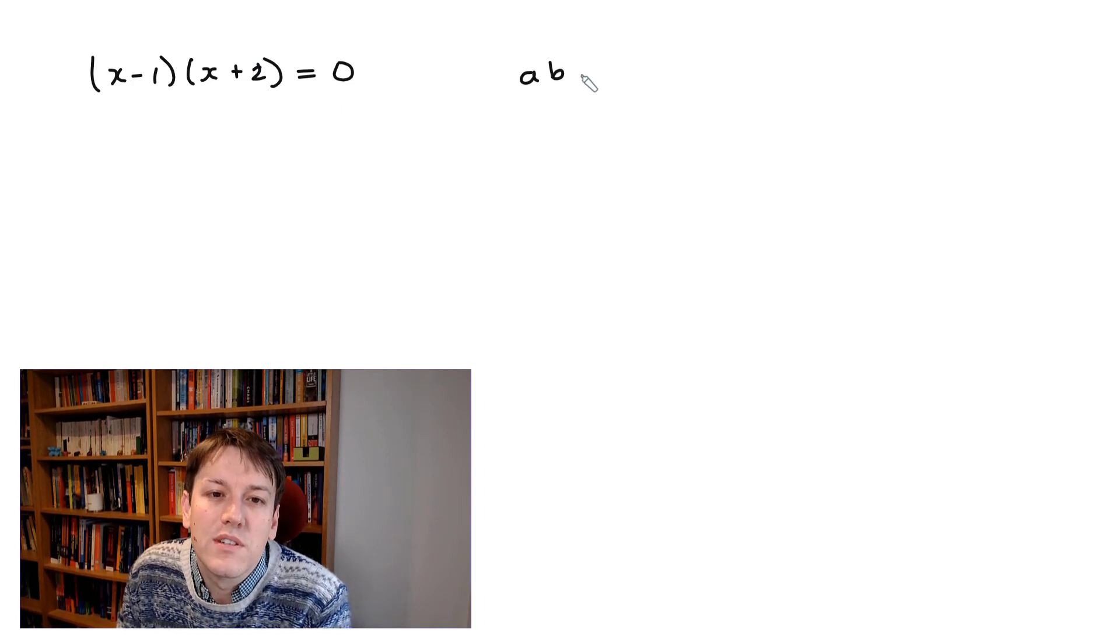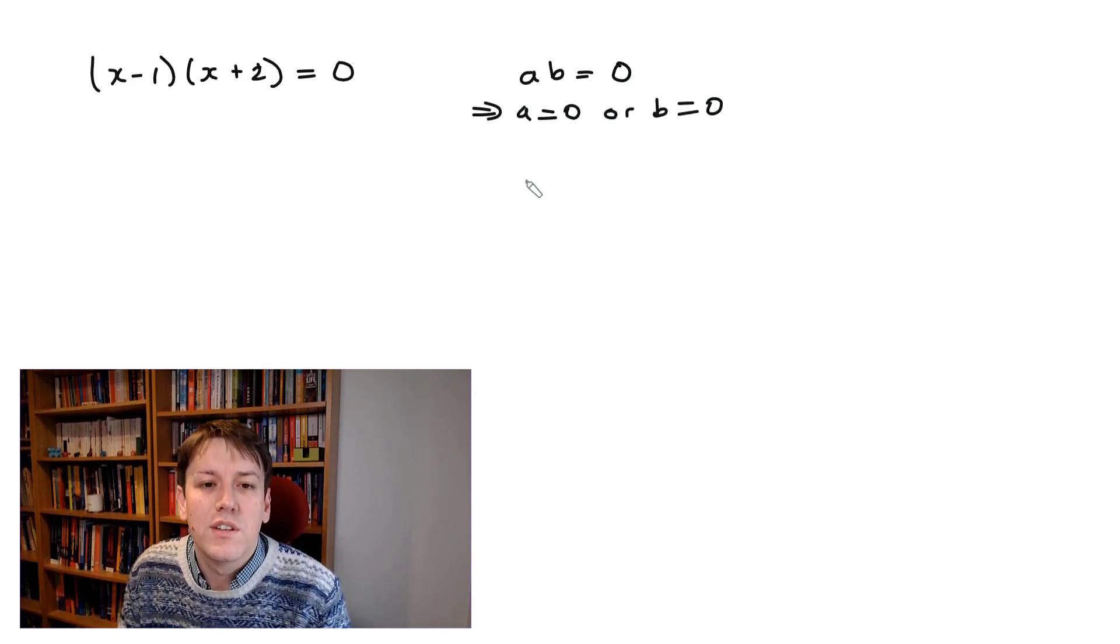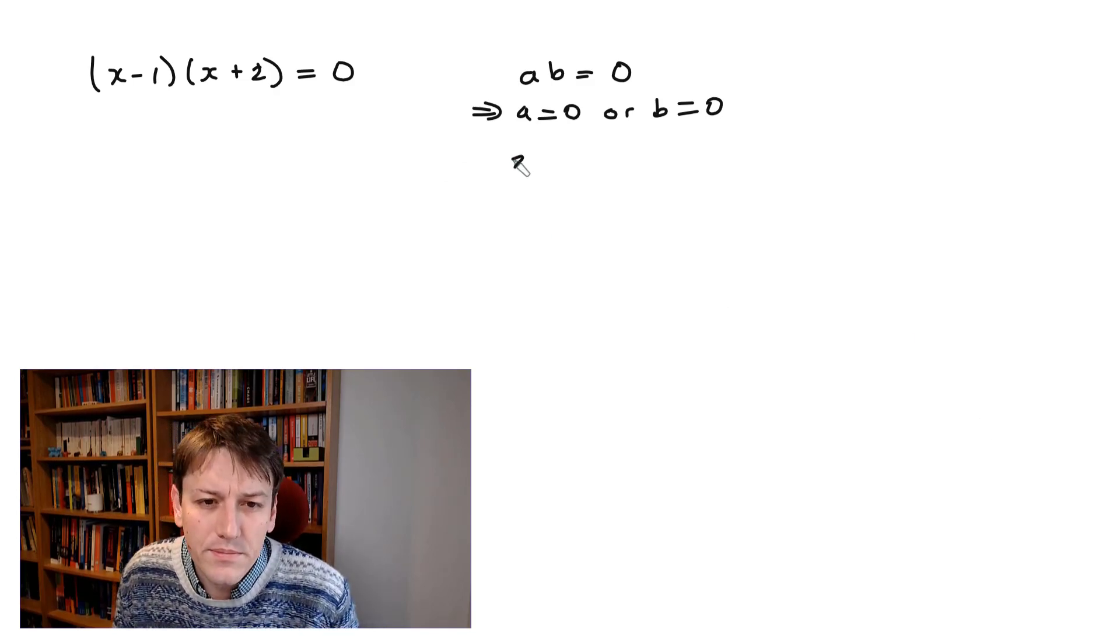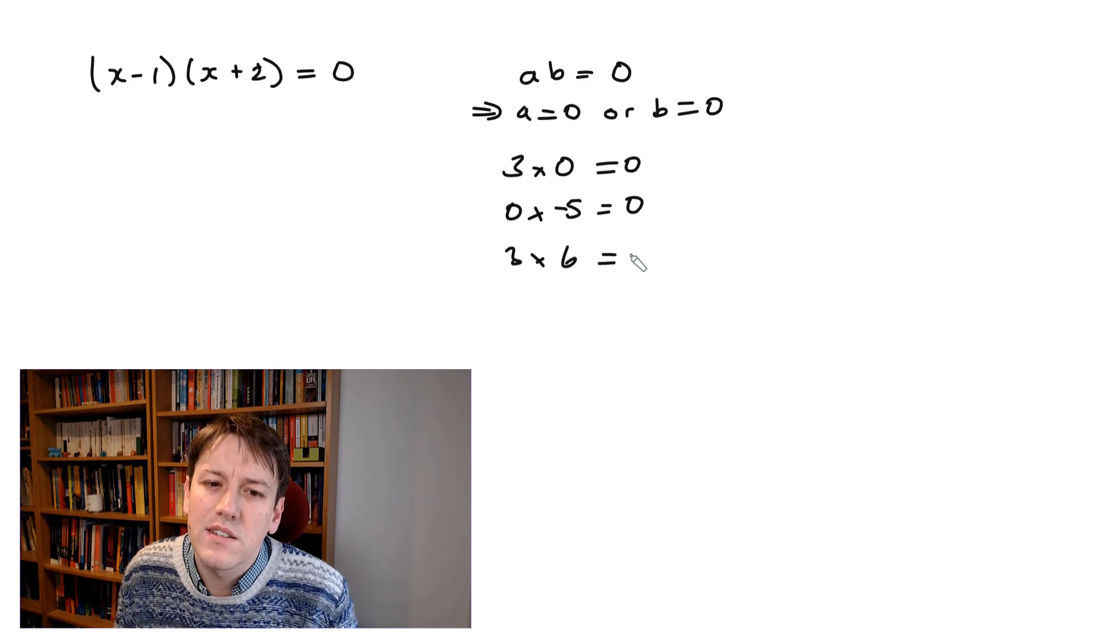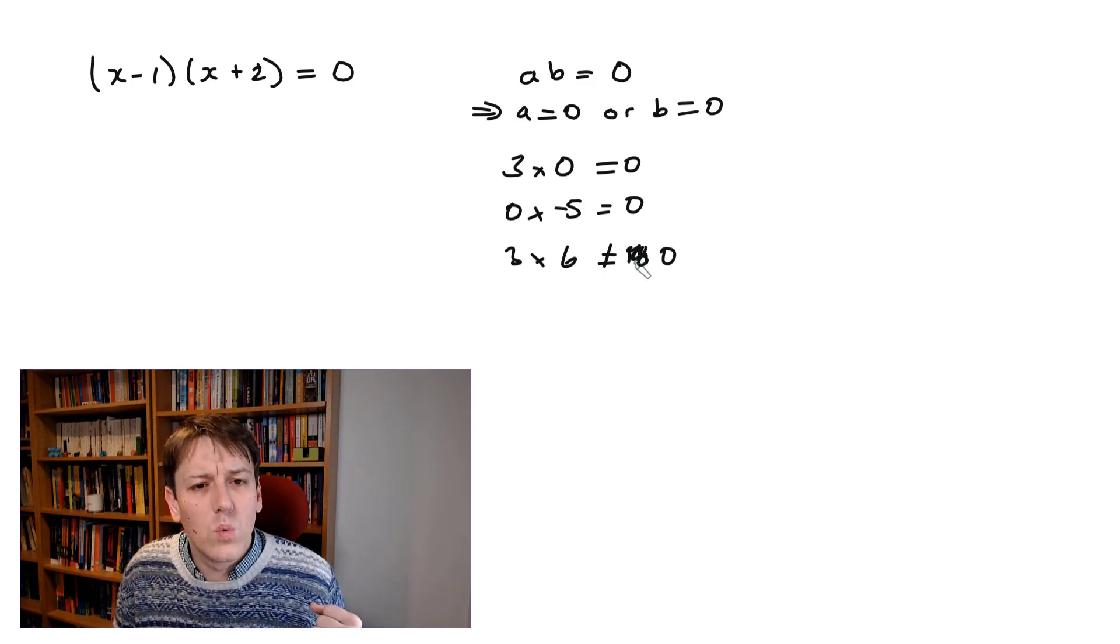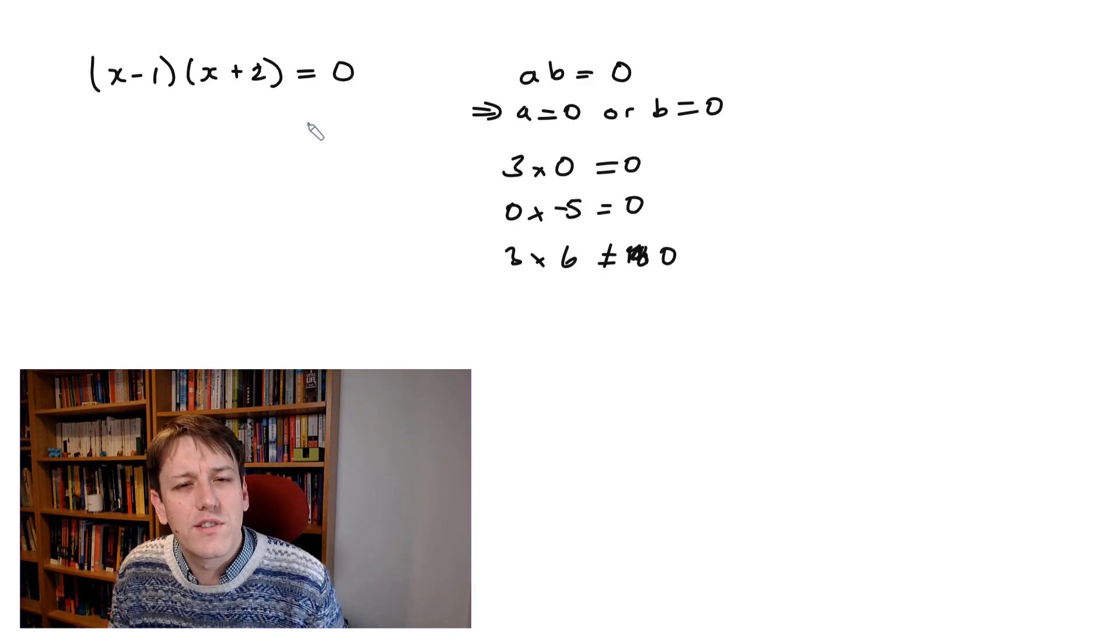So the logic that it's based on is this: if you have two numbers, a and b, that multiply together to give 0, then it must be the case that either a is 0 or b is 0. And although this sounds like an easy thing to say, it's so important to understand. So for example, if I have 3 times 0, I get 0. If I have 0 times -5, I get 0. But if I have 3 times 6, that's not 0, that's 18.